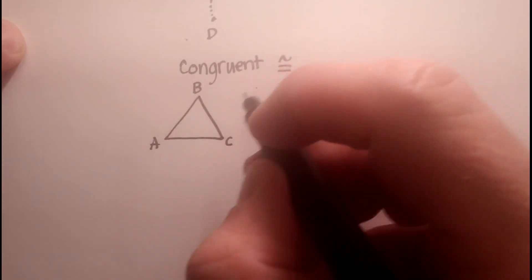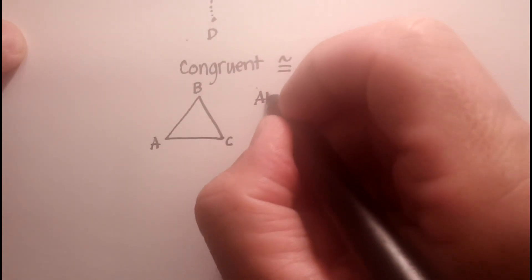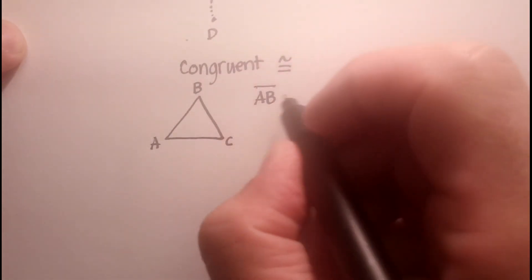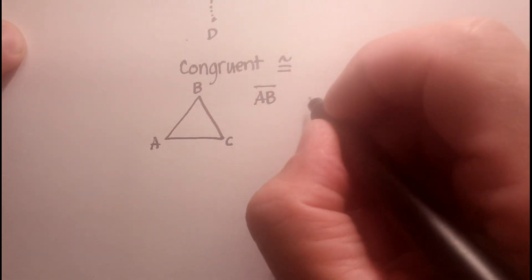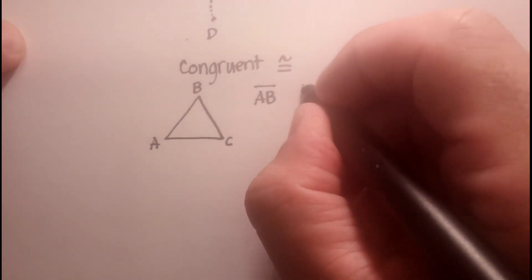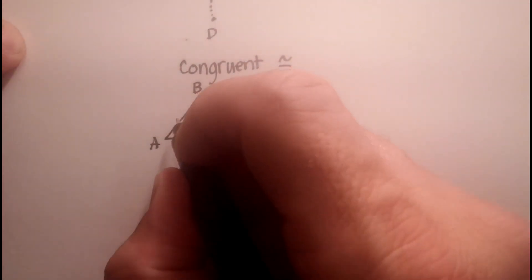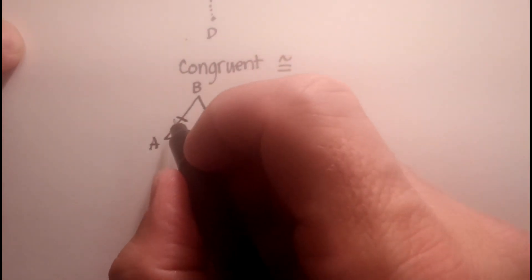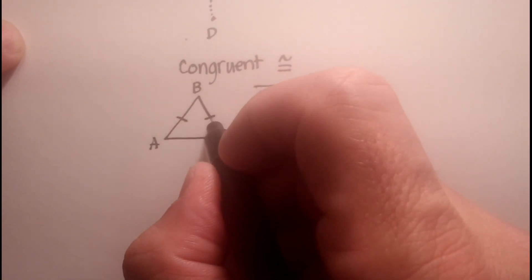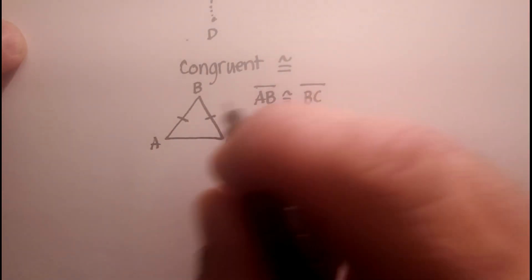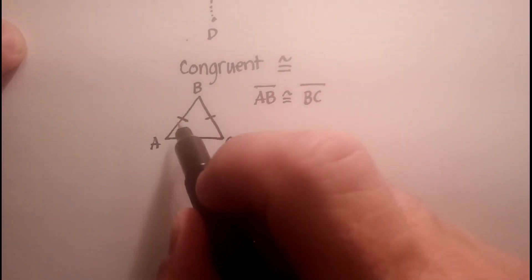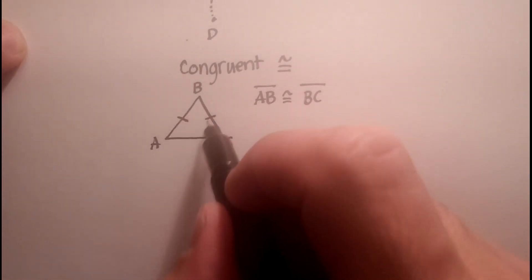So this line segment AB, remember line segments have just a straight line, and line segment BC are exactly the same length. I would do that by putting a little slash, one slash through both of those. And I would say that they are congruent. And that's what congruent means. They're exactly the same length. And that's how you designate it.